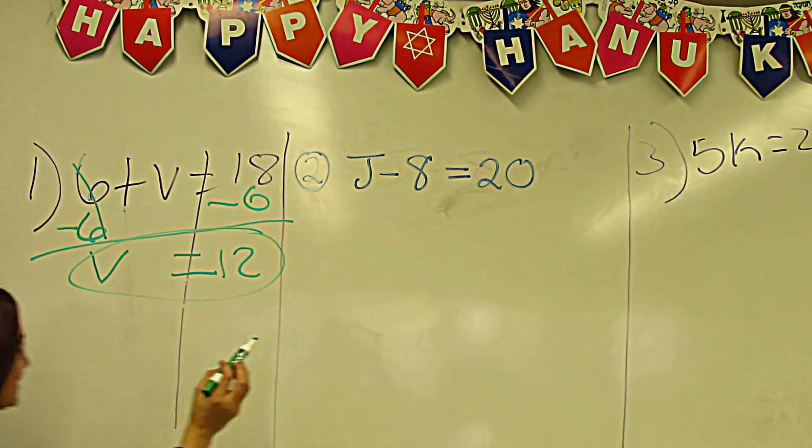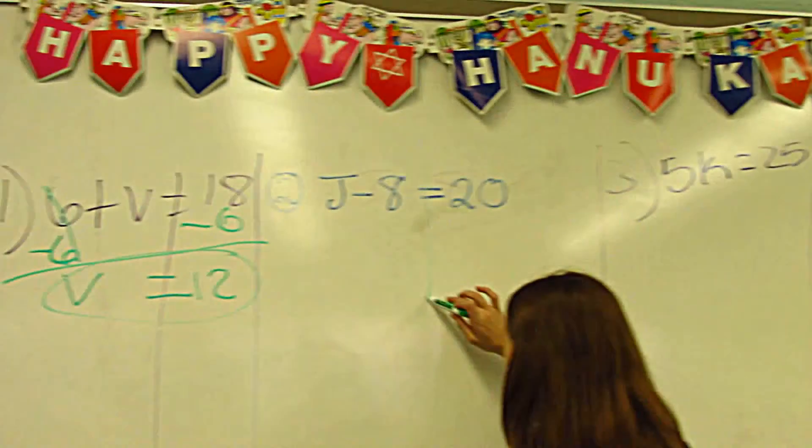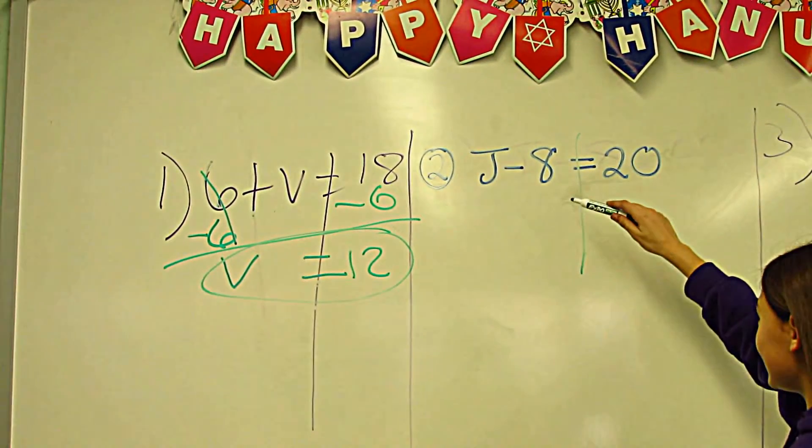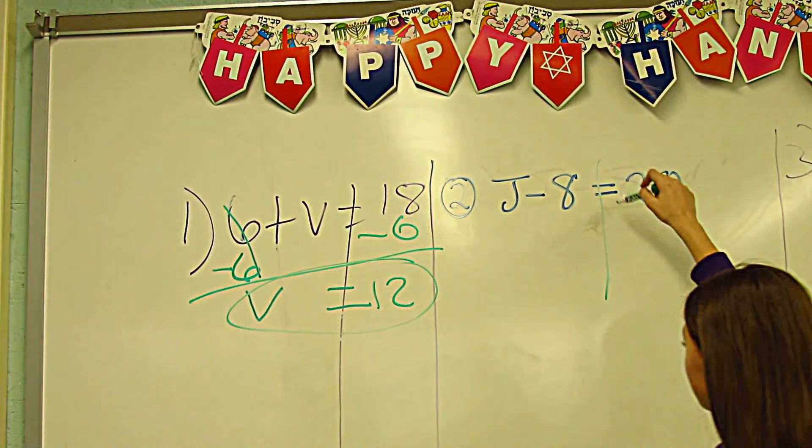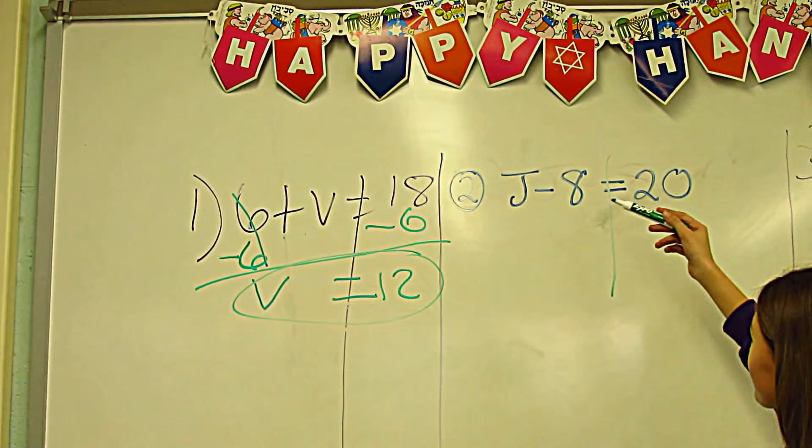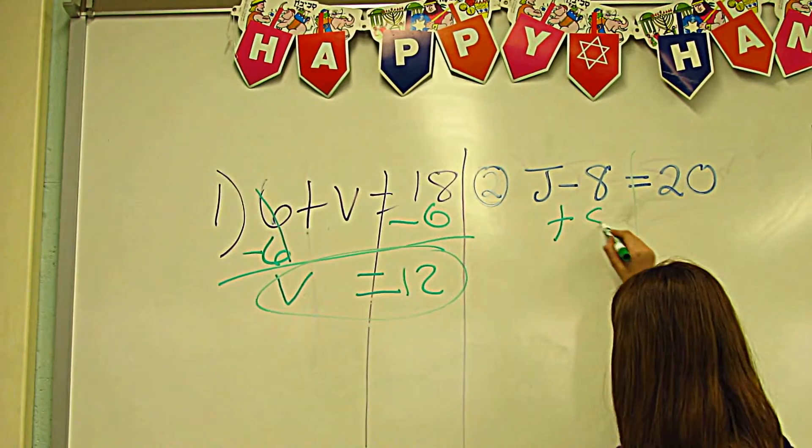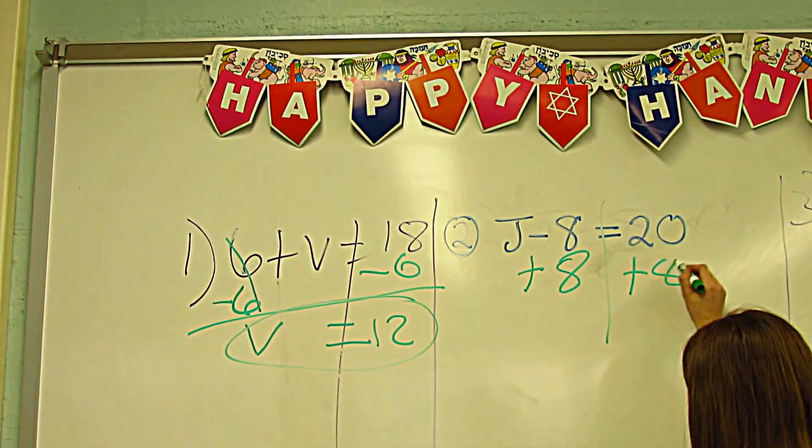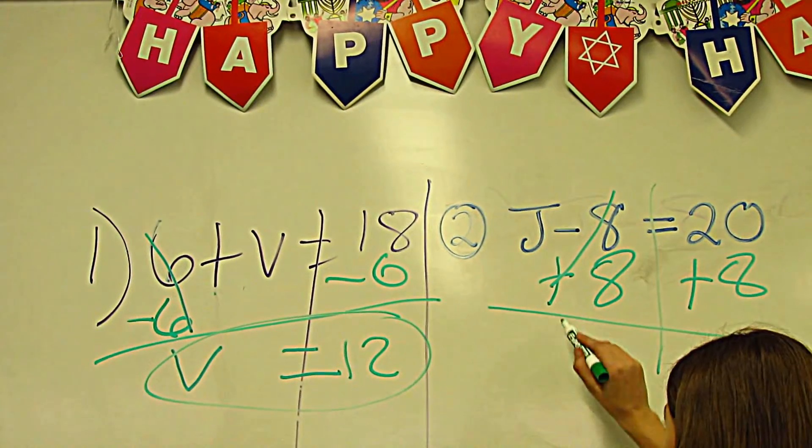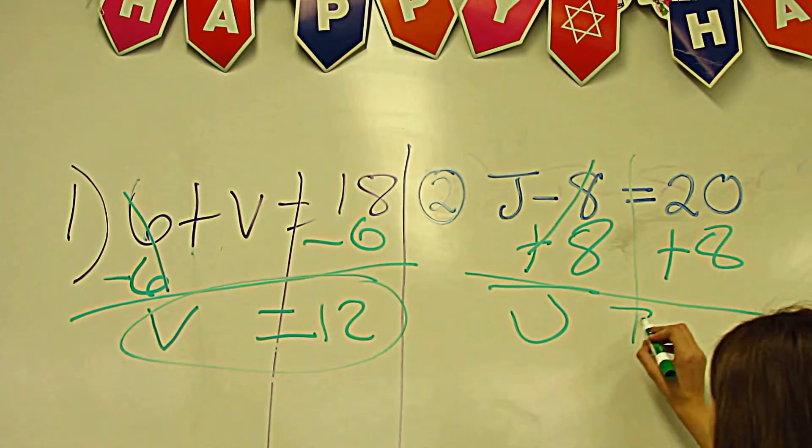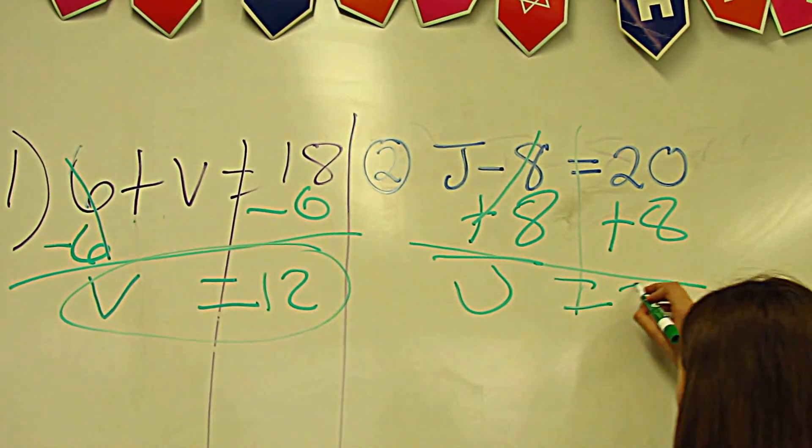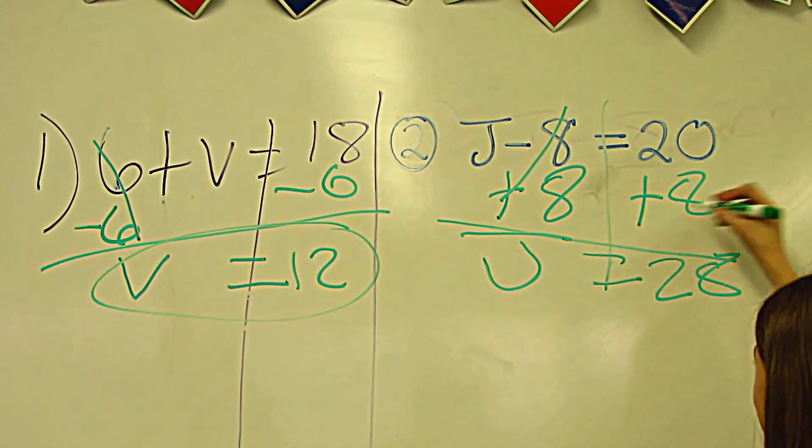Number two. It's subtracting, so you want to do the opposite of subtracting, which is addition. You're going to add eight on each side. This cancels out, so you're going to drop down the J. J is equal to twenty-eight, because twenty plus eight is twenty-eight.